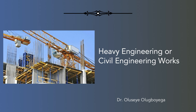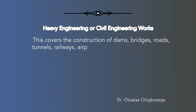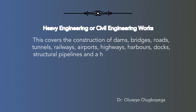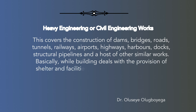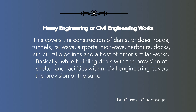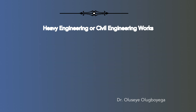Heavy engineering or civil engineering works covers the construction of dams, bridges, roads, tunnels, railways, airports, highways, harbors, docks, structural pipelines and a host of other similar works. Basically, while building deals with the provision of shelter and facilities within, civil engineering covers the provision of the surrounding infrastructures that provide services to the building.